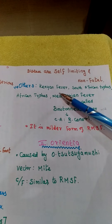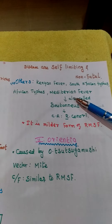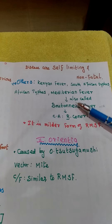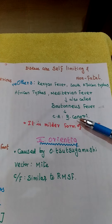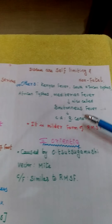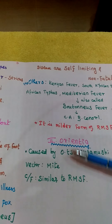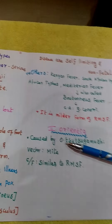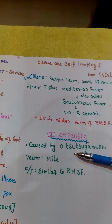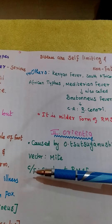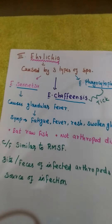Other spotted fever types include Canine fever, South African typhus fever, African typhus fever, and Mediterranean fever. One important MCQ point: Mediterranean fever is also called Boutonneuse fever, caused by Rickettsia conorii — the mild form of Rocky Mountain spotted fever. Orientia is caused by Rickettsia orientalis tsutsugamushi (scrub typhus). The vector is the Japanese mite. Clinical features are similar to Rocky Mountain spotted fever.